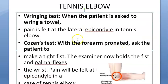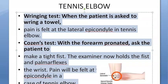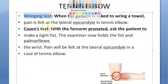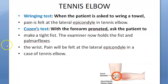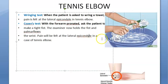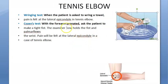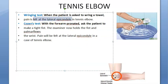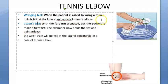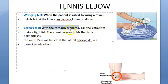There are two important clinical signs or tests for tennis elbow. The first is the wringing test — ask the patient to act as if they are wringing a towel, and they will feel pain at the lateral epicondyle.